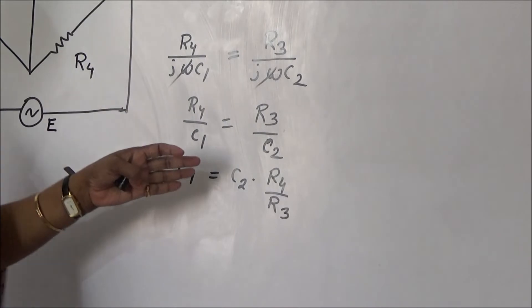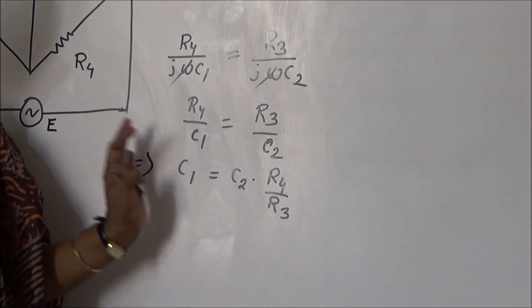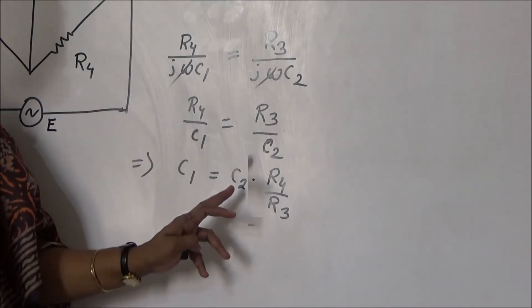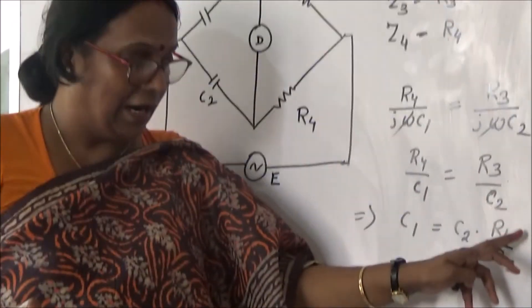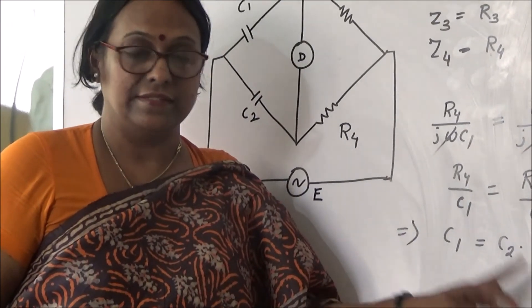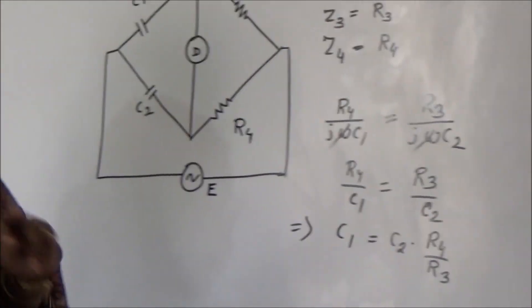So we can see the value of unknown capacitance is the multiplication of capacitance C2 times R4 by R3. Now we have to draw the phasor diagram.